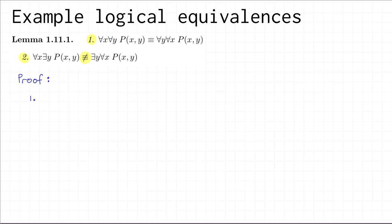In order to prove that two formulas are logically equivalent, what we have to do is choose an arbitrary interpretation and argue that those two formulas have the same truth value in that interpretation. So let's fix an interpretation and give a name to the domain. Let's call the domain A, and then we ask: what does it mean for the formula on the left, 'for all x for all y P(x,y)', to be true in this interpretation?